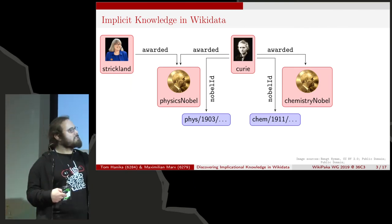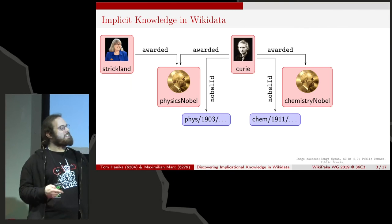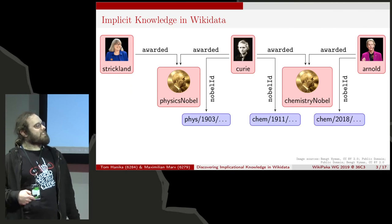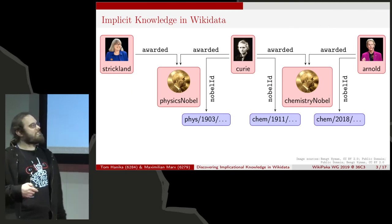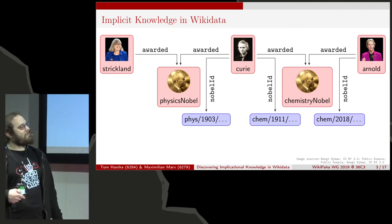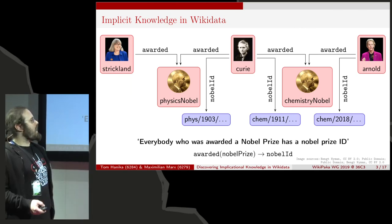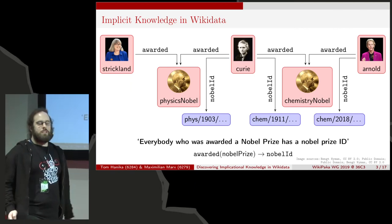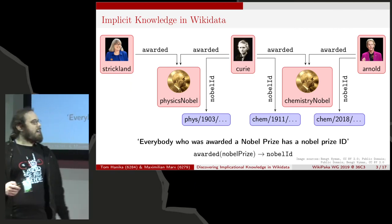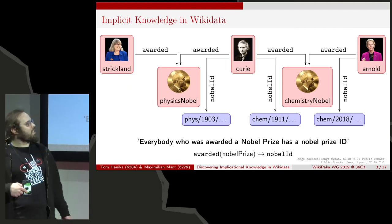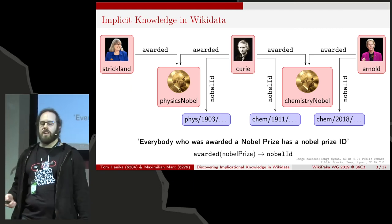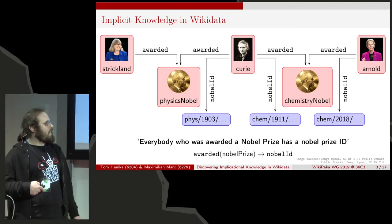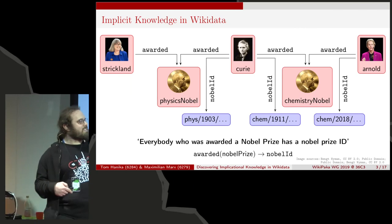Coming to implicit knowledge: we have Donna Strickland and Marie Curie both having received a Nobel Prize in Physics. Marie Curie has a Nobel Prize ID starting with FIS and 1903. She also received a Nobel Prize in Chemistry in 1911, so she has another Nobel ID starting with CHEM and 1911. Francis Arnold received a Nobel Prize in Chemistry last year, so she has a Nobel ID starting with CHEM and 2018. One could assume that everybody who was awarded a Nobel Prize should also have a Nobel Prize ID — we could write that as the implication: awarded Nobel Prize implies Nobel ID.